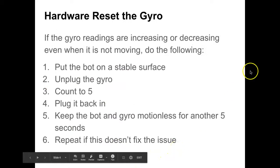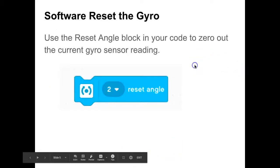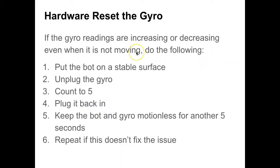What's a hardware reset? A hardware reset is basically you unplug it and plug it back in. This is what happens if your readings are increasing or decreasing even when the robot is not moving. Put the bot on a stable surface, unplug the gyro sensor, count to five, plug it back in, and keep both the bot and gyro sensor motionless for another five seconds. If that doesn't work, try it again.